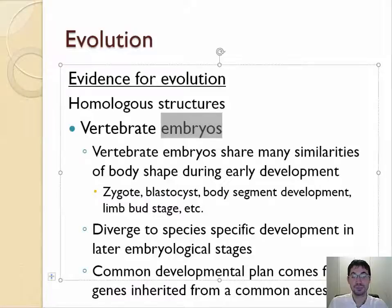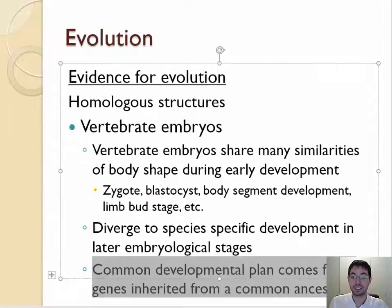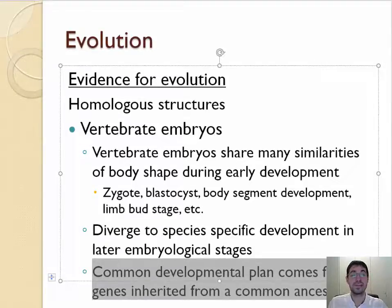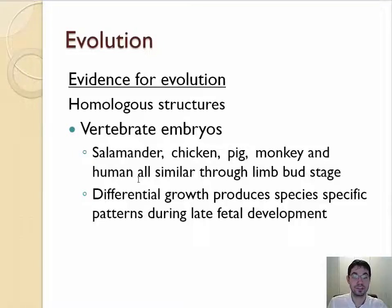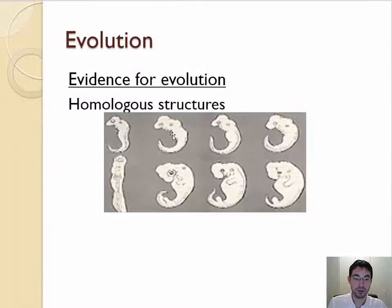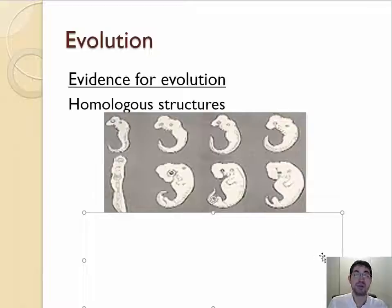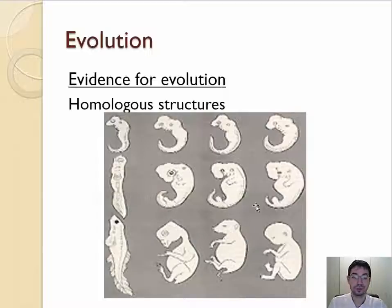We can also see this in embryos. Vertebrate embryos share many basic similarities, and those similarities seem to suggest coming from a common ancestor. Humans, salamanders, chickens, pigs, monkeys all have very similar structures because of our ancestors. Right at the beginning, all four types actually have gills because we had an ancestor that lived underwater. Then we can see all of them have tails because we come from an ancestor with tails. But as we grow in utero, the parts that aren't used actually disappear. Those homologous structures — structures of the same basic design but used for different purposes — show evidence of evolution.